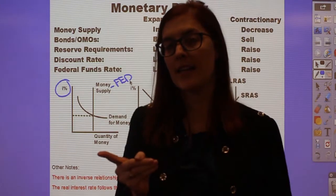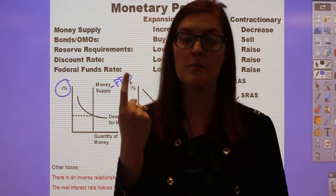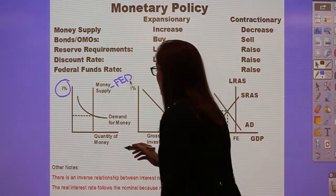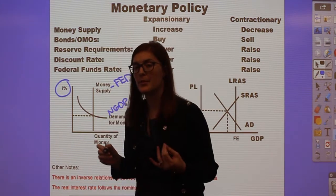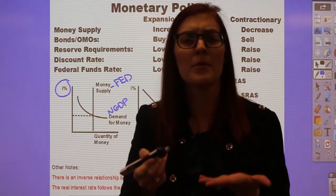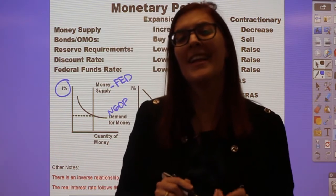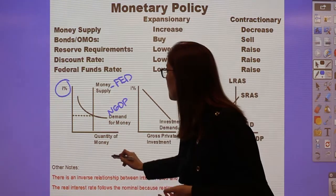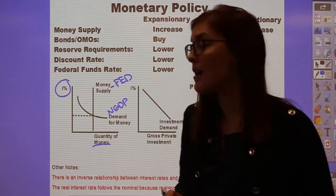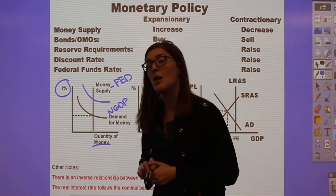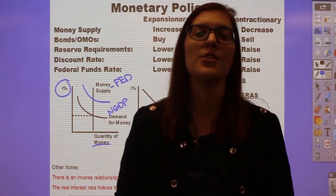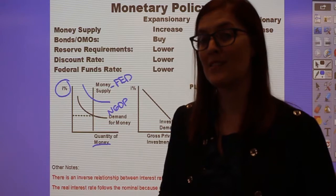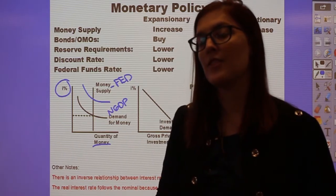Then we have the money demand line. If only the Fed can move the money supply, everyone else — consumers, producers, the government, the foreign sector (C, I, G, X-N) — nominal GDP moves money demand. The most common AP trap is moving the money supply when the government acts. The money demand line can only move directly up or down, because non-Fed actors cannot change the quantity of money. For example, expansionary fiscal policy would increase money demand, raising nominal interest rates.